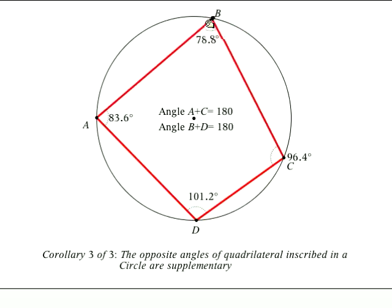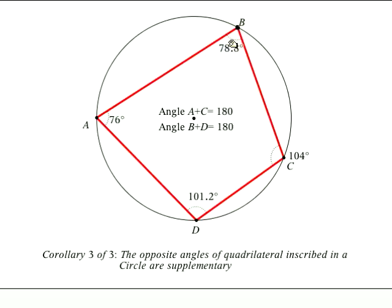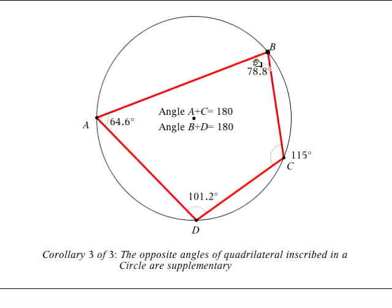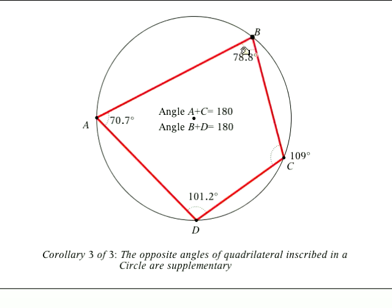Now as I move around point B, you can see angles A and C are changing as I move them around because their angles are changing. They still add up to 180.